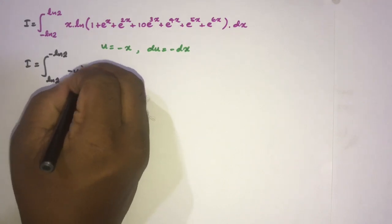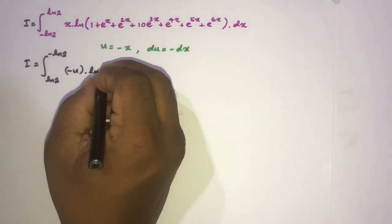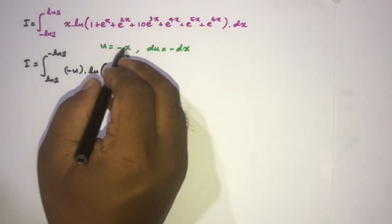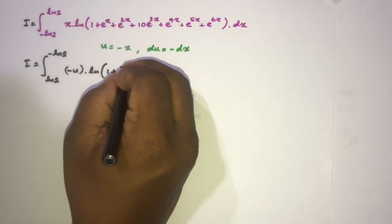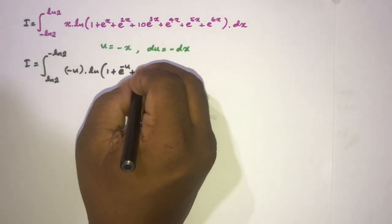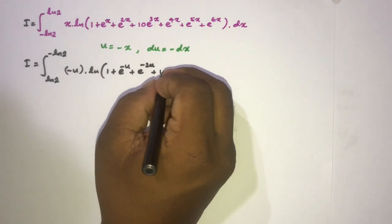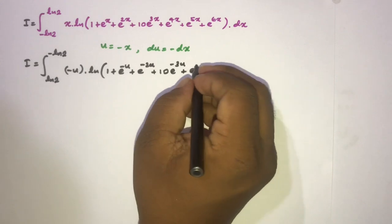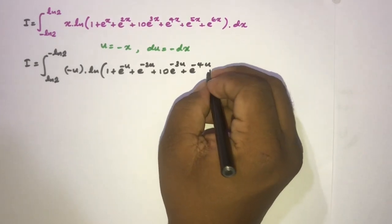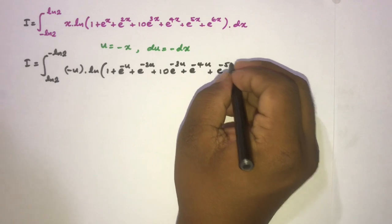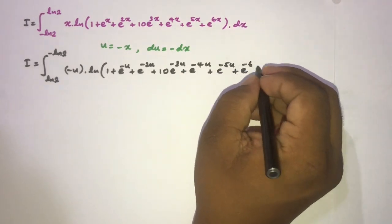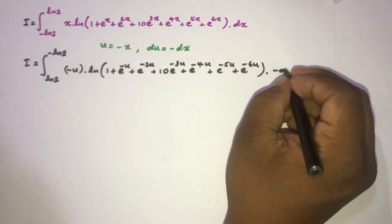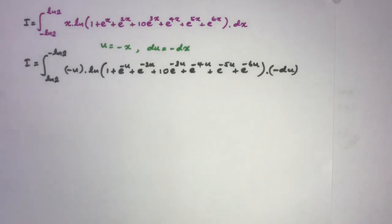Since x equals minus u, we substitute: minus u times the natural log of 1 plus e^(-u) plus e^(-2u) plus 10·e^(-3u) plus e^(-4u) plus e^(-5u) plus e^(-6u), and dx becomes minus du.